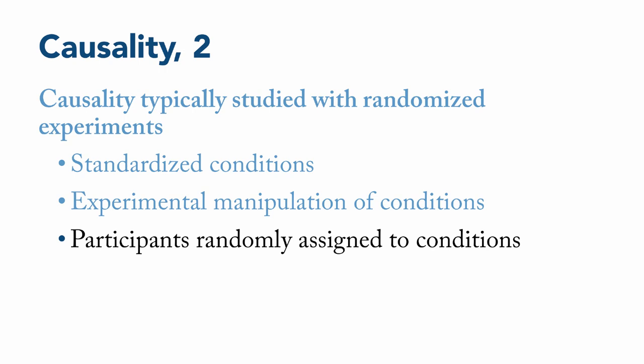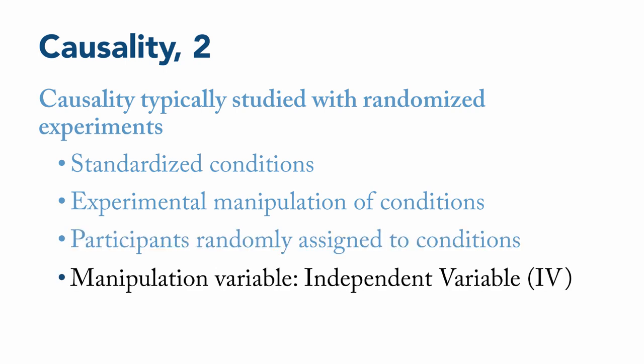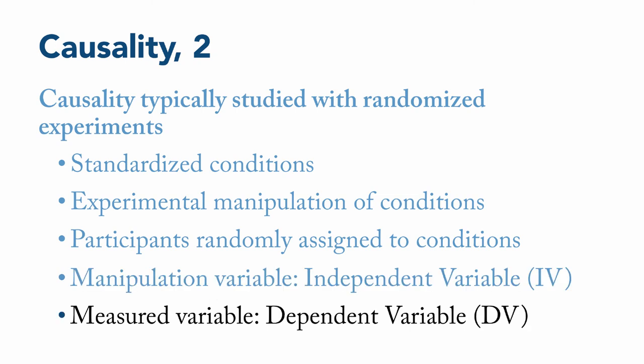In an experimental context, it's common to call the manipulated variable, that is, the one you control, like the medicine or curriculum assigned, the independent variable, or IV. It's independent because it doesn't depend on anything else in the study. And the measured outcome variable, or the thing that should be affected by the manipulation, such as the wellness of a patient or the learning of students, is called the dependent variable, or DV. That's because the scores on this depend in part on the condition that you assign people to in the independent variable.